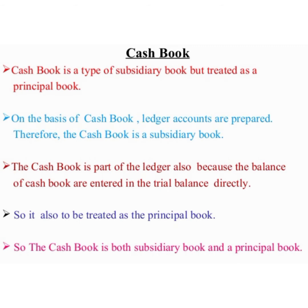Cash transactions have two aspects: receipts and payment. The cash book records all cash receipts and cash payments. According to Andrew, the cash book is used for recording the receipts and payments of money — whether in coins, notes, checks, postal orders, bank drafts, etc. Cash book is the most important subsidiary book because it keeps the initial record of cash transactions of the business.